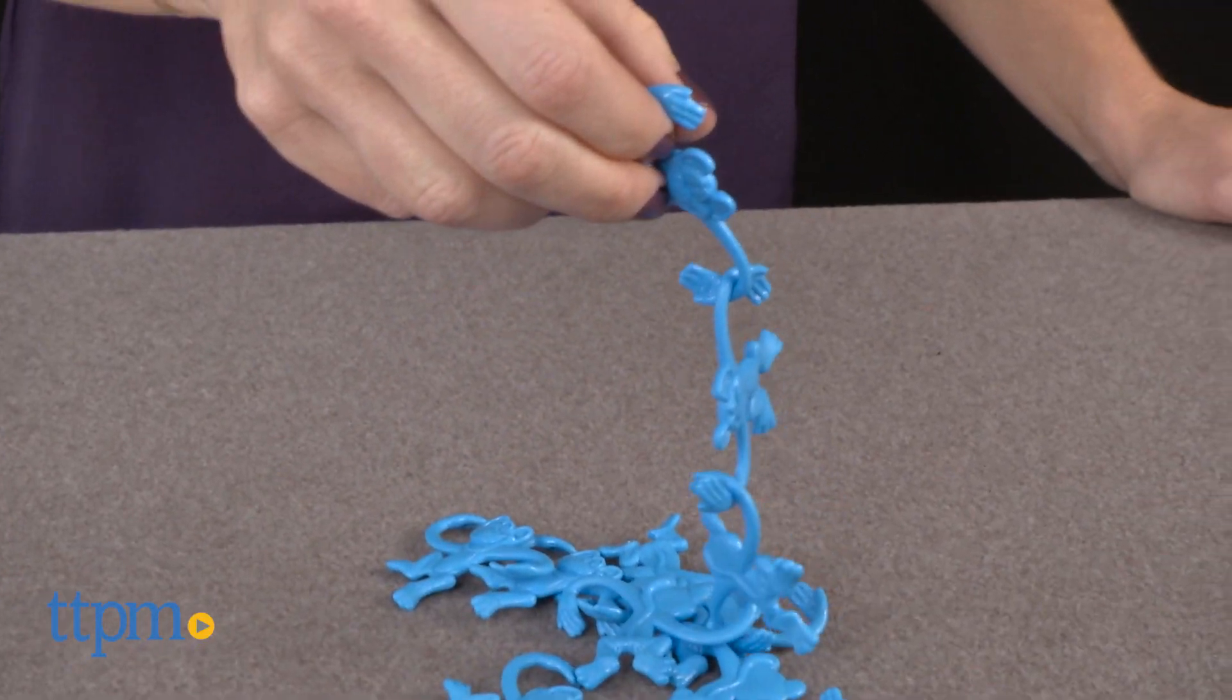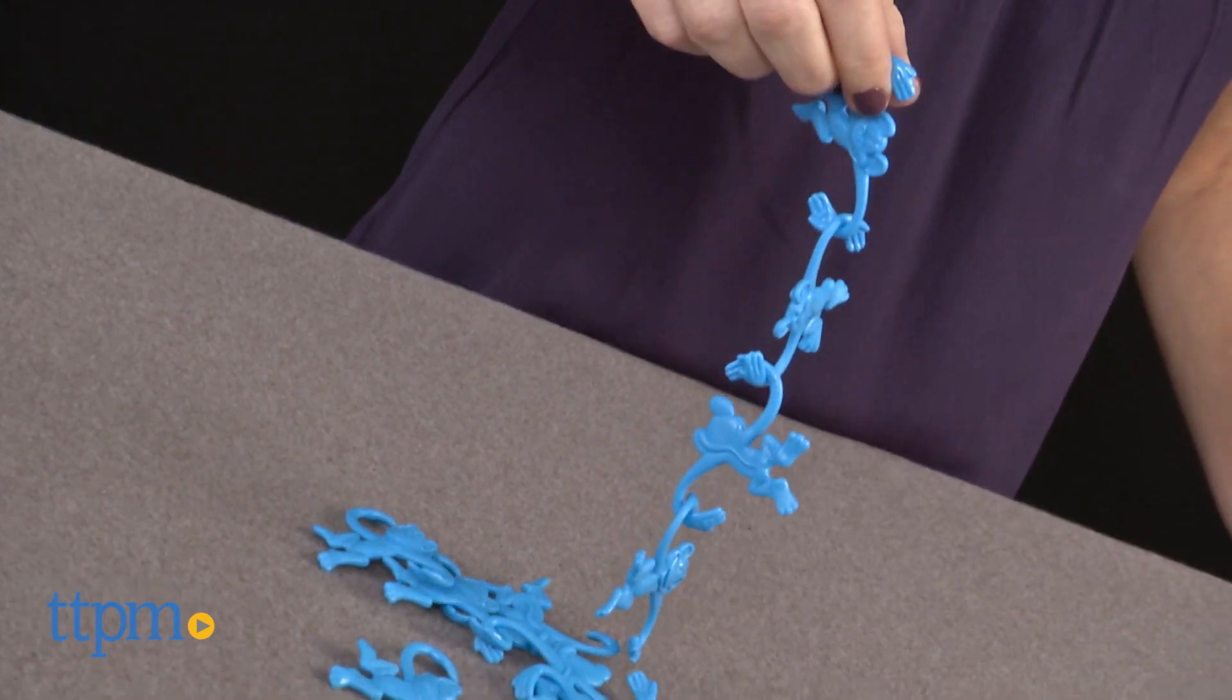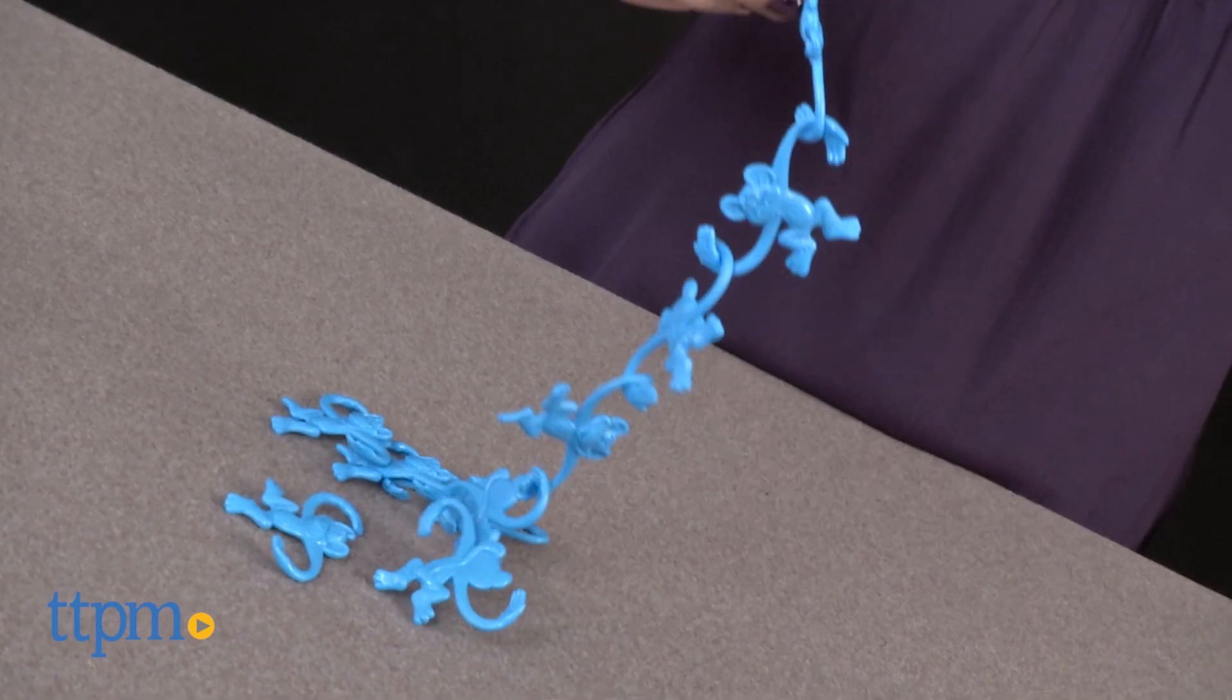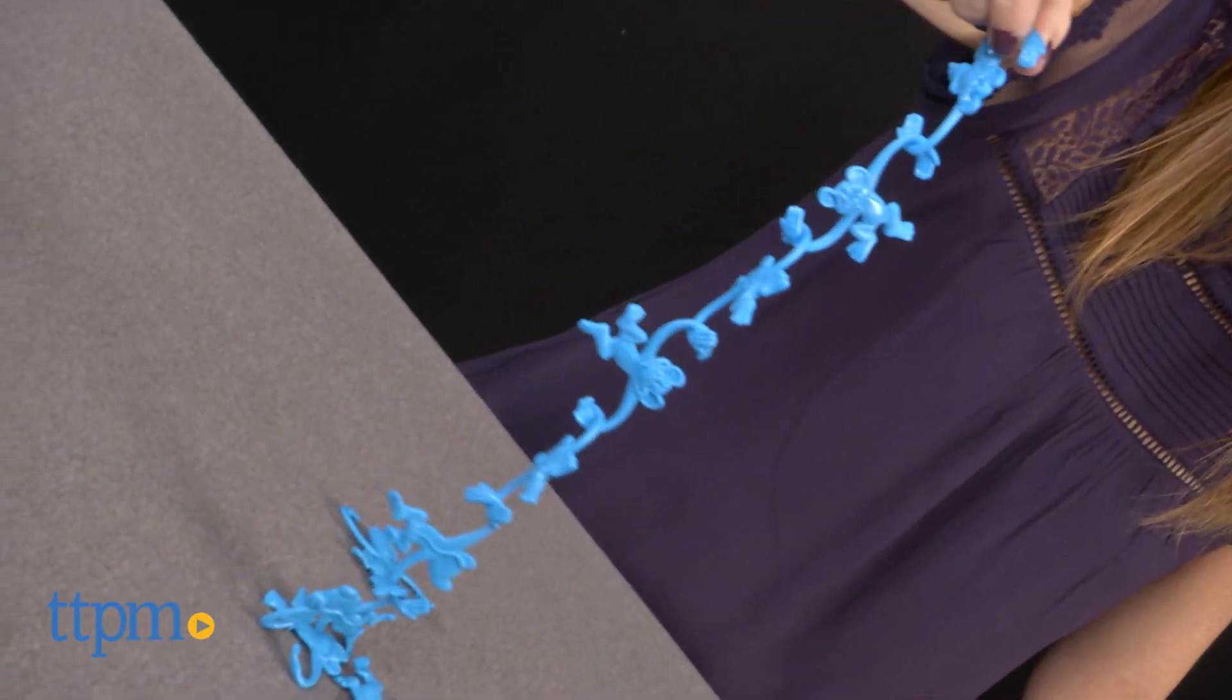A plastic barrel is filled with 10 plastic monkeys. Throw them in a pile so they're all tangled up, and use one monkey's arm to pick up another monkey, then another, then another, until you build a monkey parade, or they all fall.